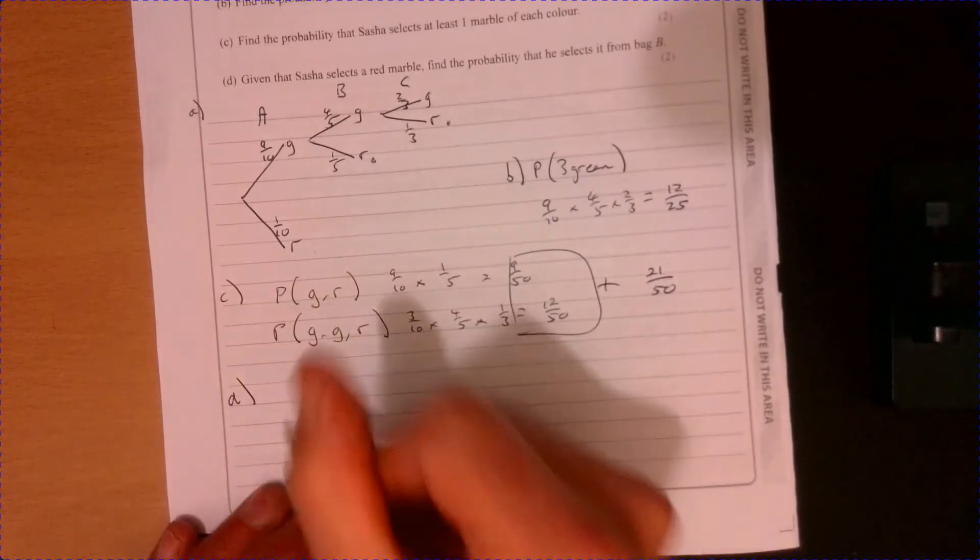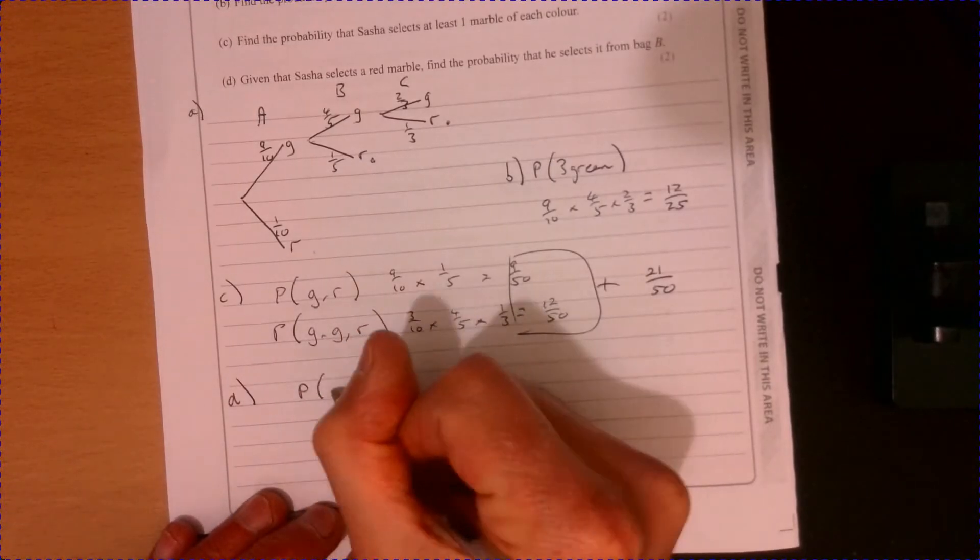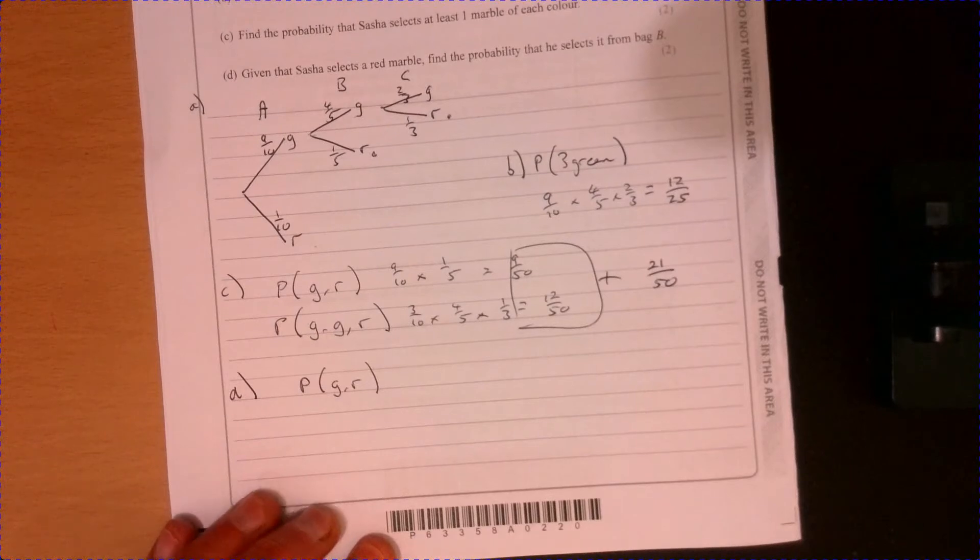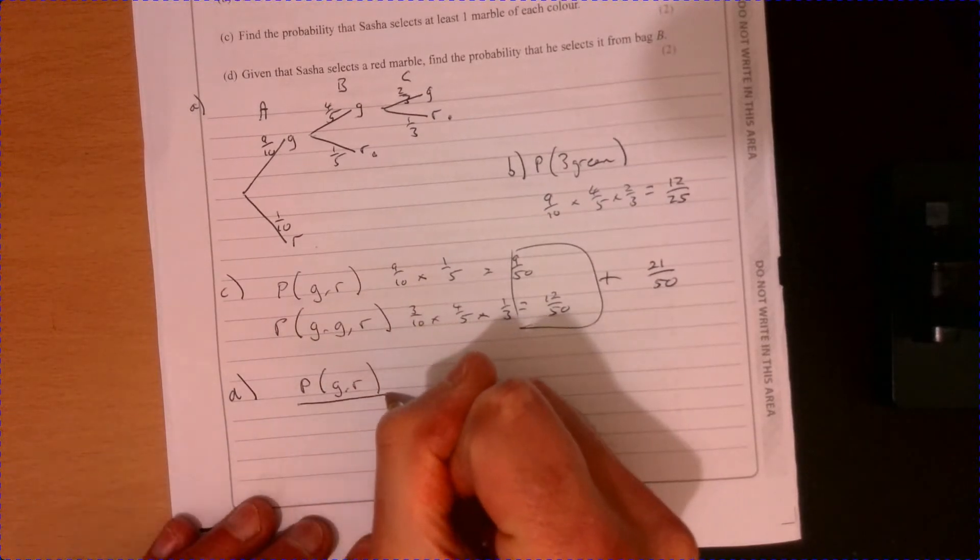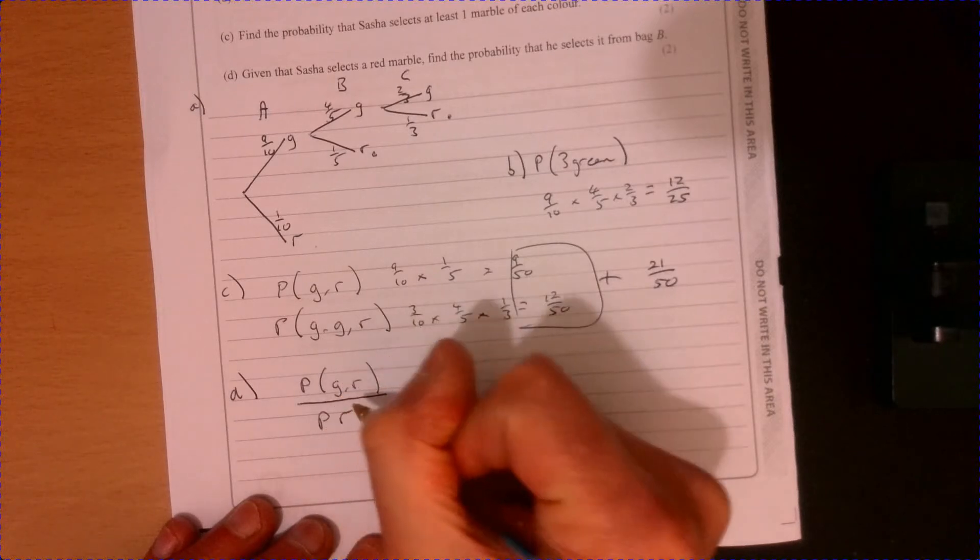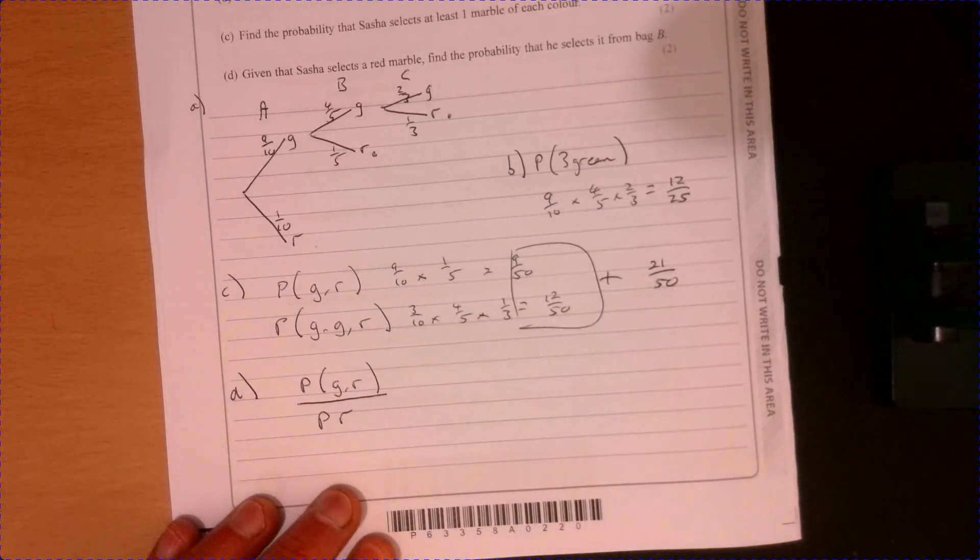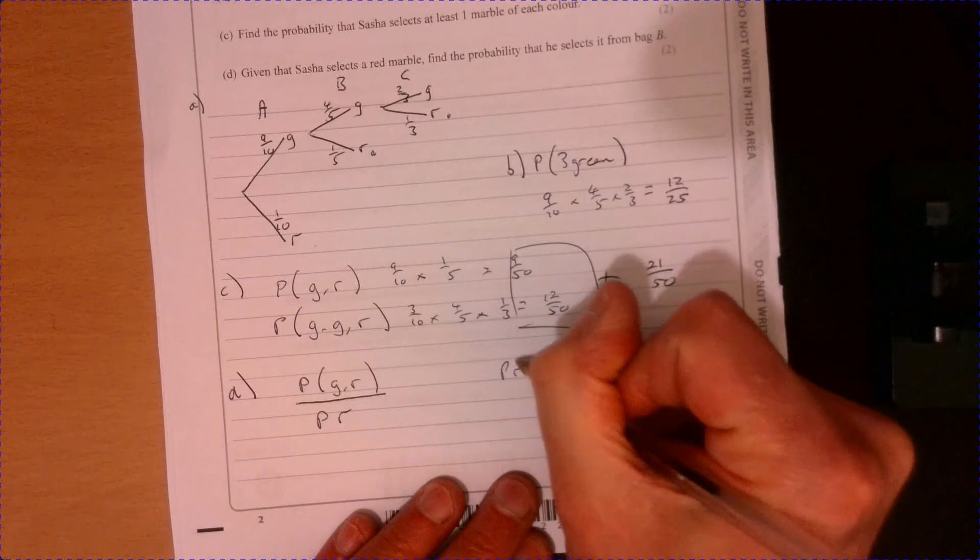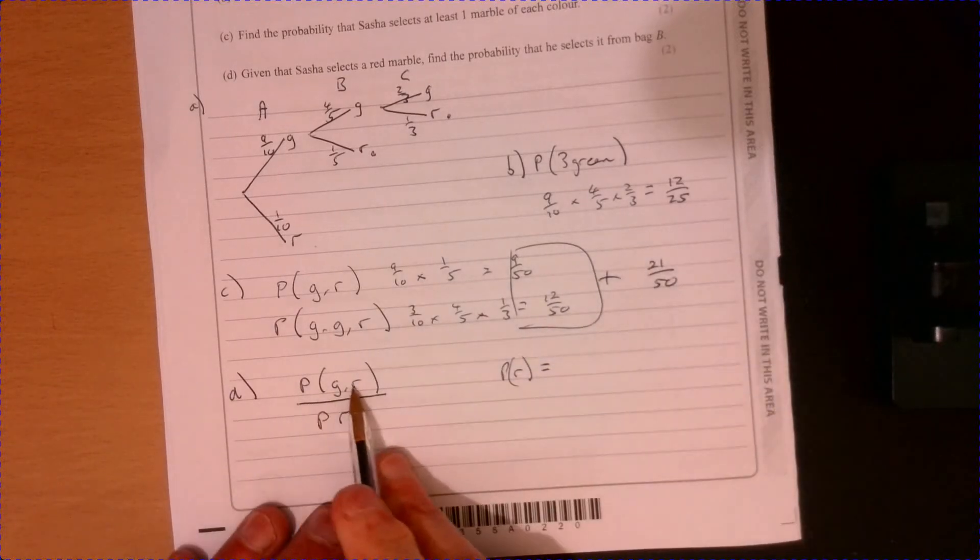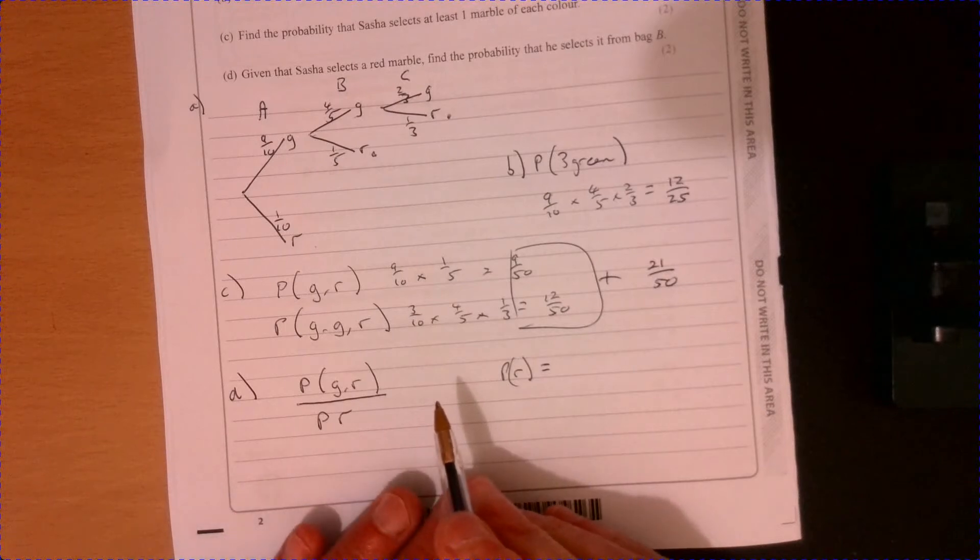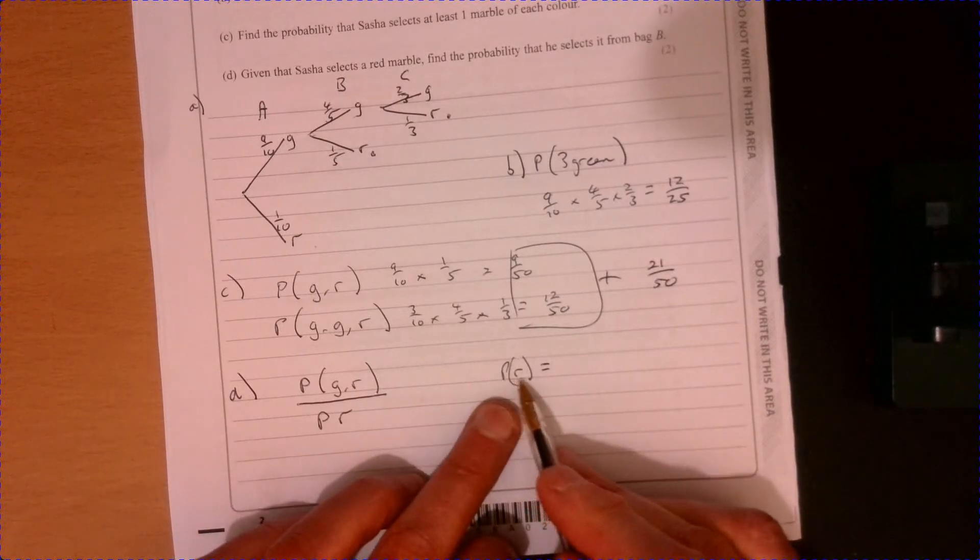So we need to do the probability that it's from bag B. That's that. And divide by the probability that he selects a red marble. So the probability of a red marble, first of all, that's the only one we haven't considered. We know the answer to that. It's there. So we're okay about that part.